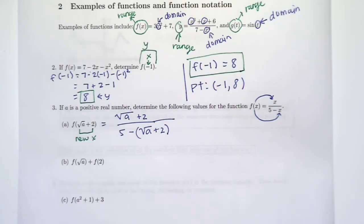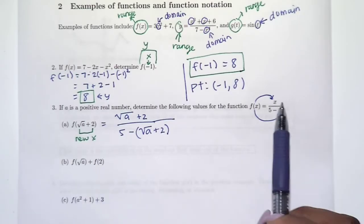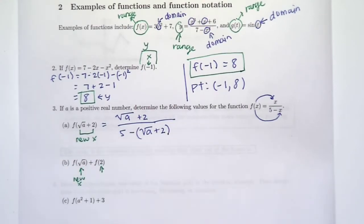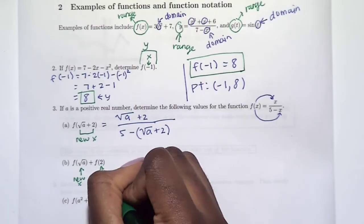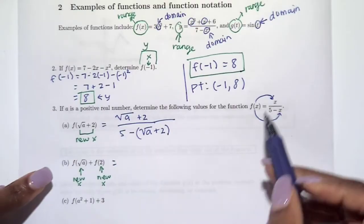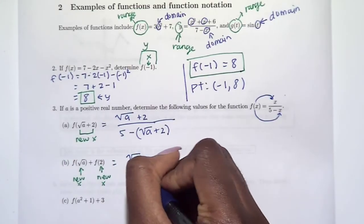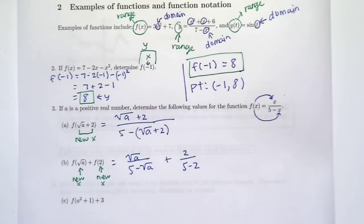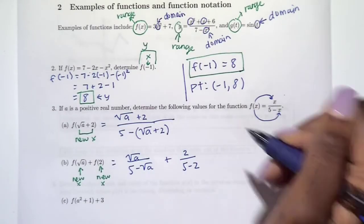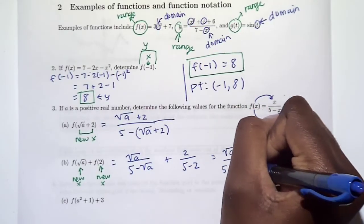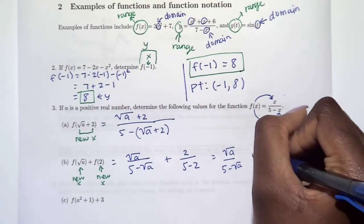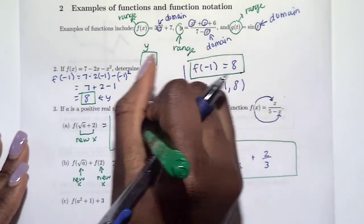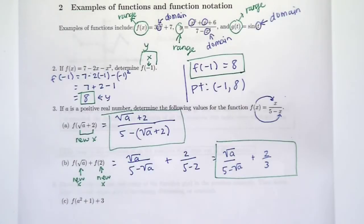Let's do another one. Here we have our function listed twice, so we're going to have to do all of this twice — where the square root of a is our new x, and then we're going to use 2 as our new x. So instead of x we're using the square root of a, plus, and instead of x we're using 2. We can actually simplify this one: 5 minus 2 is 3. I always like to box my answer so we're very clear where the answer is.